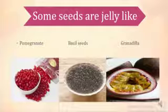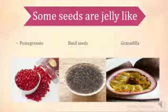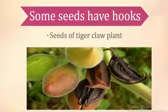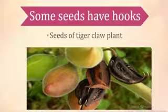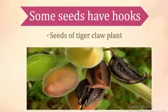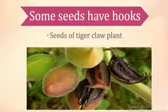Have you ever seen seeds which have a jelly-like structure? Yes, there are some examples of seeds like pomegranate, basil seeds, and granadilla. These have a jelly-like structure and they are looking very beautiful, like crystals.